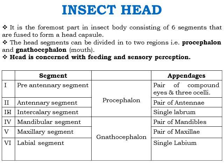The head segment can be divided into two regions: the procephalon and the gnathocephalon (the mouth activity region). The first segment is the pre-antennal segment, which covers the procephalon — it bears a pair of compound eyes and ocelli. The antennal segment, also from the procephalon, bears a pair of antennae, which is a very important sensory organ of the insect. The third segment is the intercalary segment from the procephalon, which bears a single labrum.